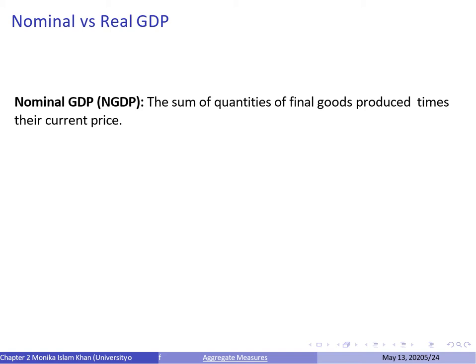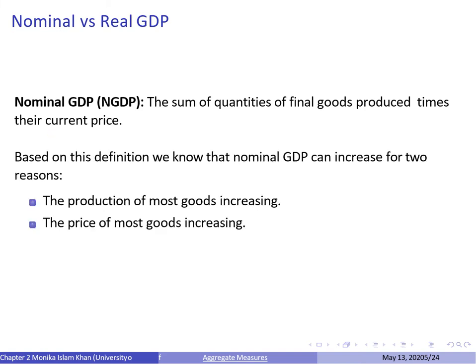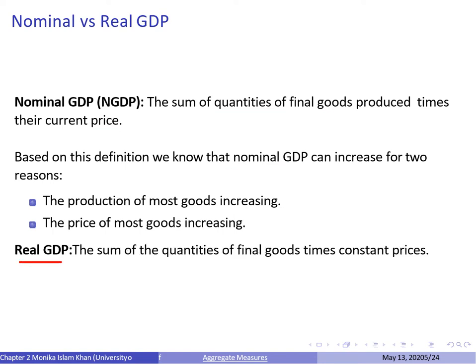The GDP calculated using these methods is your nominal GDP, which is the sum of quantities of final goods produced times their current price. Nominal GDP could increase for two reasons: the quantity of final goods is increasing, or the current price is increasing. Real GDP, on the other hand, calculates the sum of quantities of final goods times their constant prices — that is, it calculates GDP as if prices had stayed constant and not changed over time.